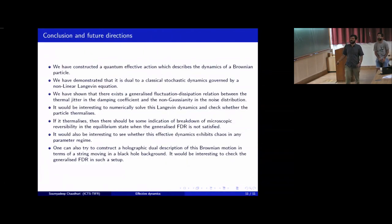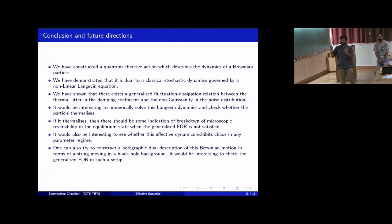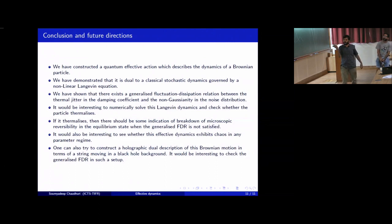We have constructed a quantum effective action which describes the dynamics of a Brownian particle. We have demonstrated that it is dual to a classical stochastic dynamics governed by a non-linear Langevin equation. We have shown that there exists a generalized fluctuation-dissipation relation between the thermal jitter in the damping coefficient and the non-Gaussianity in the noise. It would be interesting to solve this non-linear Langevin dynamics and check whether the particle thermalizes. If it thermalizes, there should be some indication of breakdown of microscopic reversibility in the equilibrium state when the generalized fluctuation-dissipation relation is not satisfied.